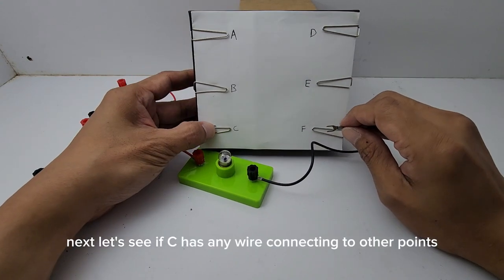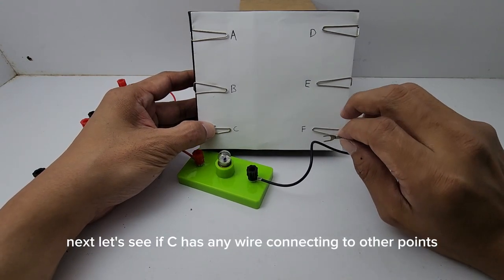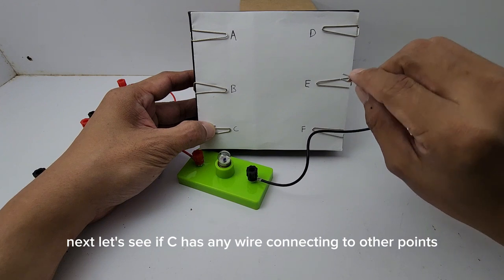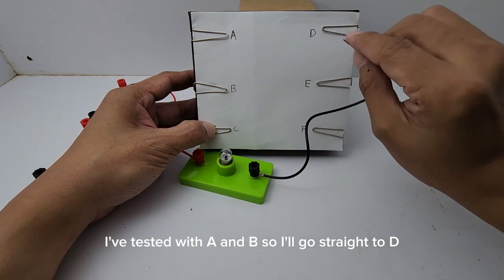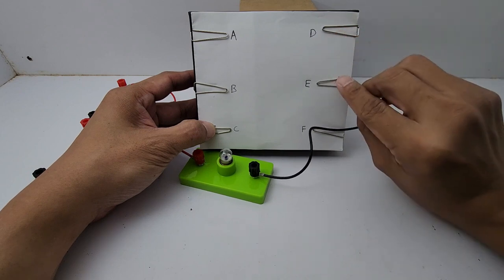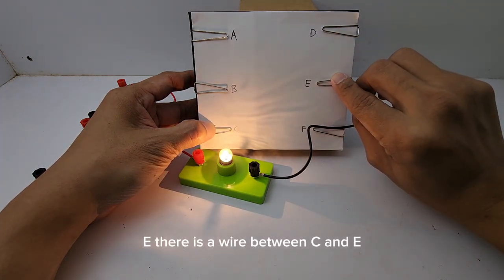Next, let's see if C has any wire connecting to other points. I've tested with A and B, so I'll go straight to D, E. There's a wire between C and E.